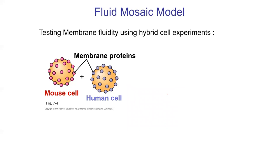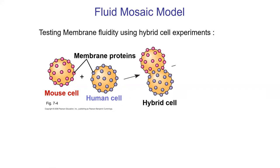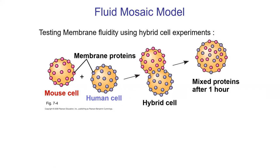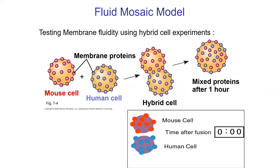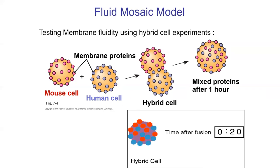For the fluid part, a classical experiment used a mouse cell and a human cell, labeling their surface proteins with fluorescent markers — originally red and green, now often changed to pink and purple for colorblind accessibility. The cells were fused together using a detergent, and then simply observed. Over time, the proteins were seen to move within the phospholipid bilayer, demonstrating the fluid part of the model. An animation shows the fusion event and membrane proteins moving around.